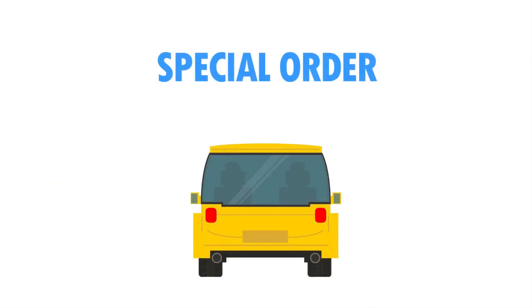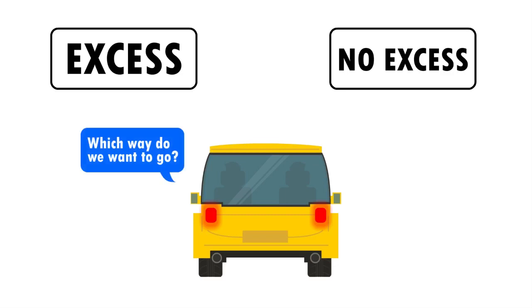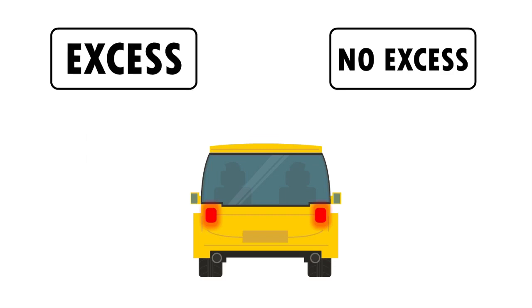The first one is a special order. We'll join our friends here in the car — they're driving down the road and have reached a T-intersection. The first question they have to ask is which way do we want to go, and the question depends upon capacity. If we go left, it means we have excess capacity for this special order — customers come to us saying they want us to make something unique for them, and we do have the capacity to do that.